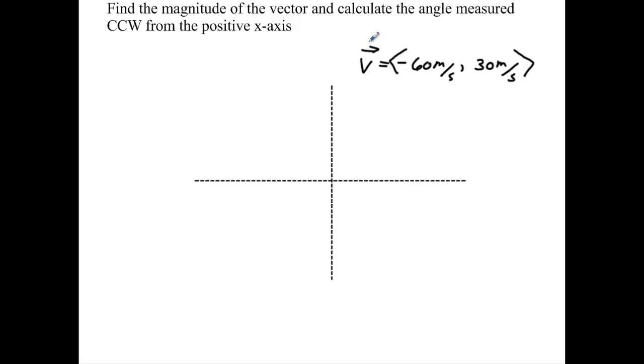Here we have a velocity vector. It has minus 60 meters per second, and it's in component form, comma, 30 meters per second. That means its x component is minus 60, its y component is 30.